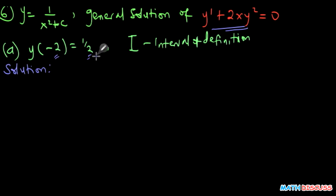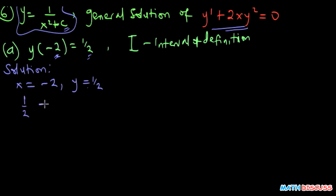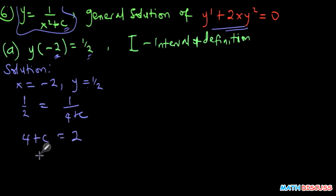To start, let's find the particular solution. The initial condition is: when x equals negative 2, y equals half. We substitute these two values into the general solution to find a value for c. So we have y equals half equals 1 over x squared — x squared is going to be 4 — plus c. To find c, we cross multiply: 4 plus c equals 2, so c equals 2 minus 4, which is negative 2.